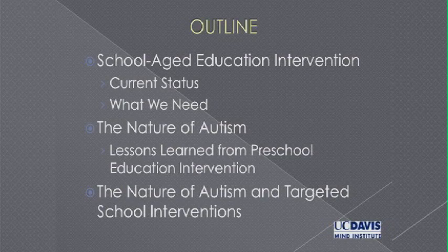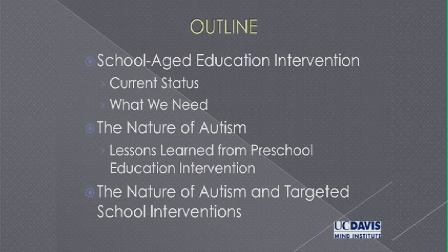K through 12 is the longest period of systematic intervention opportunity for all children with autism that we have. It's the most equitable as well because people from varying socioeconomic strata can get basically the same potential number of hours of intervention. And yet we haven't really shifted gears from the preschool, which is very important, to bringing the science of autism to the classroom to really help teachers understand better how to work more effectively with these children.